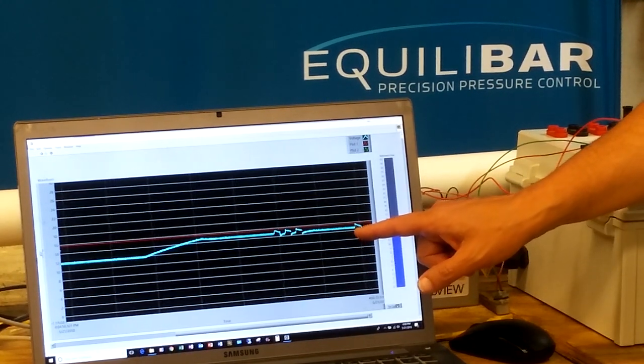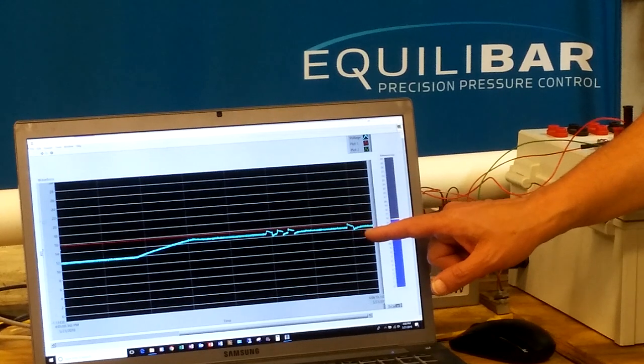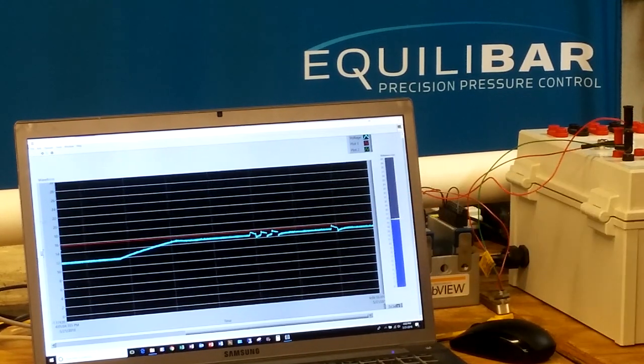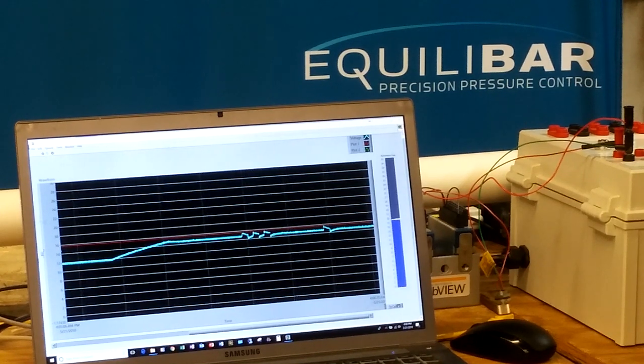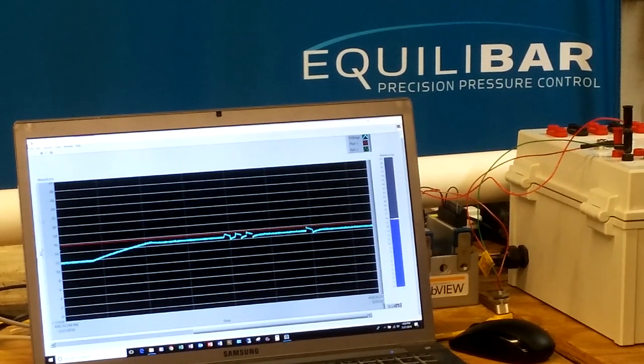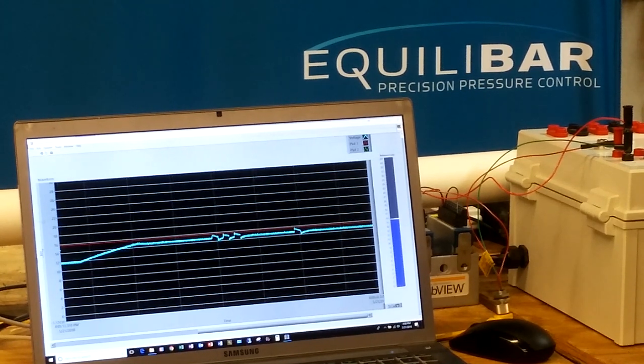So full flow, the same flow that we had before, the same flow disturbance, but the amount of vacuum change in the system is dramatically reduced. That's because of the Equilibar's high-speed ability to respond to changes in flow in the system.